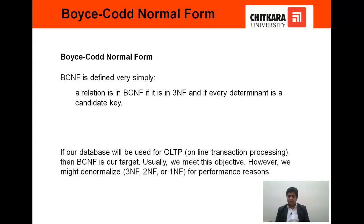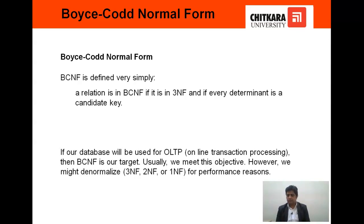Summarizing my lecture: Normalization is generally done to avoid anomalies. Anomalies are of three types: update, insert, and delete. To avoid these anomalies, the database is normalized. Normalizations are further categorized into 1NF, 2NF, 3NF, and BCNF. There are also 4NF, 5NF, and nowadays 6NF. 4NF and 5NF are of no practical use. So we will talk about 1NF, 2NF, 3NF, and BCNF. 1NF says that all the values should be atomic. 2NF says that there should be no partial functional dependencies. 3NF says there should be no transitive dependencies. And BCNF states that every determinant is a candidate key. I hope my lecture would make you understand normalization better. Thank you.